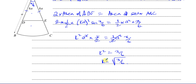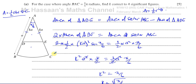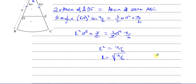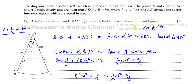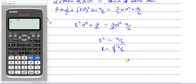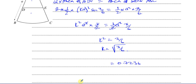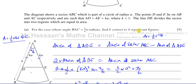We take the positive root since K is a positive length scale. To 4 significant figures, K equals the square root of π/6. Calculating this gives 0.723601..., so to 4 significant figures K equals 0.7236.